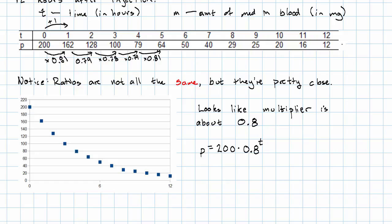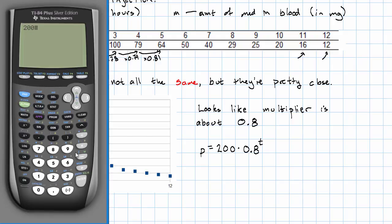Let's see how well that equation fits the later values. Like here, we have a 16 and a 12. If we take 200 times 0.8 to the - T is 11 here - 17 point something, yeah, that's pretty close to 16. 200 times 0.8 to the 12th, 13 point something, that's pretty close to 12.